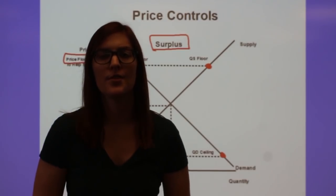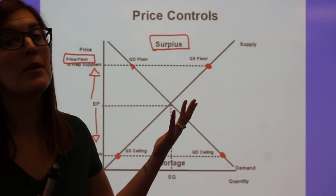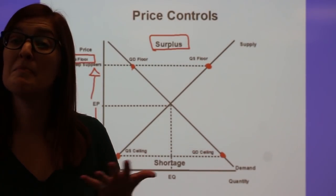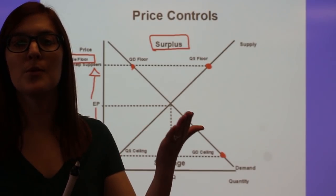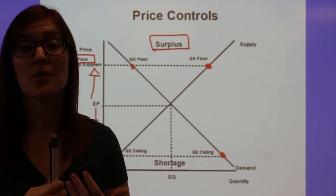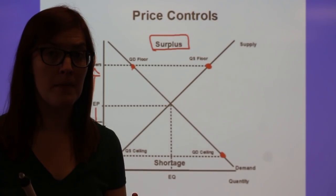This is the minimum price that the producers now can charge, which sounds great for the producers until you see on the graph if the price is above equilibrium. If that's the minimum, it's always going to end up creating a surplus because it's going to have that scenario where quantity supplied is greater than quantity demanded.